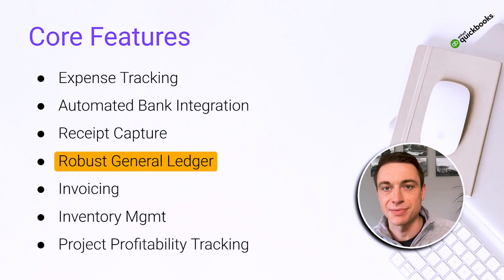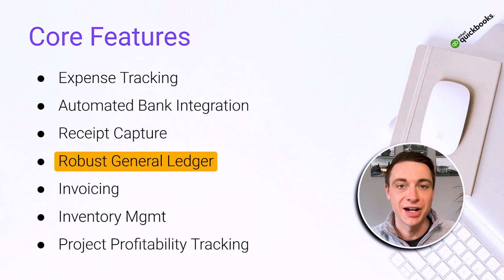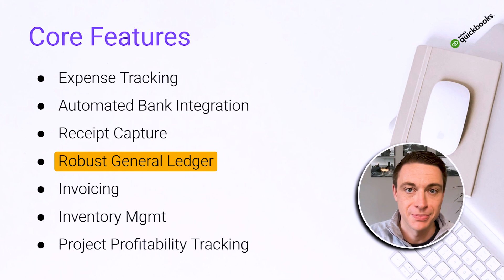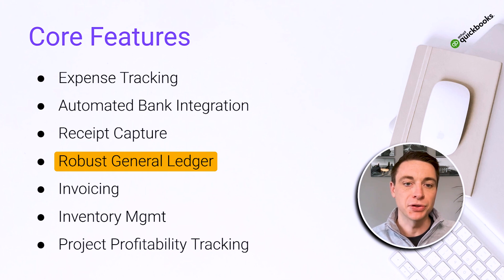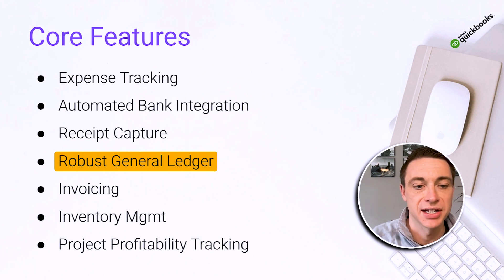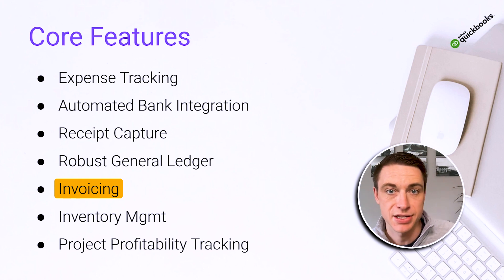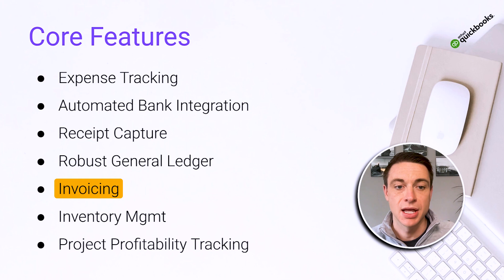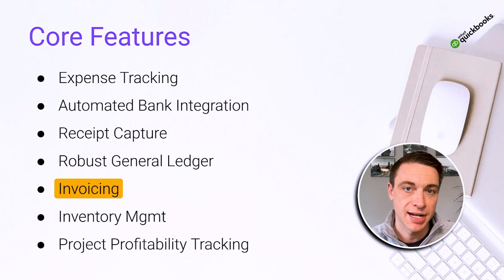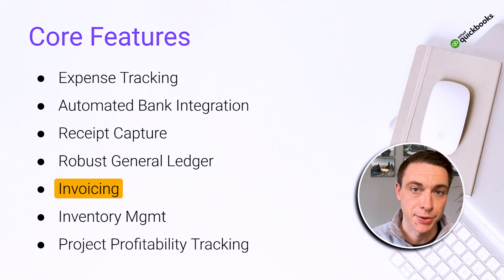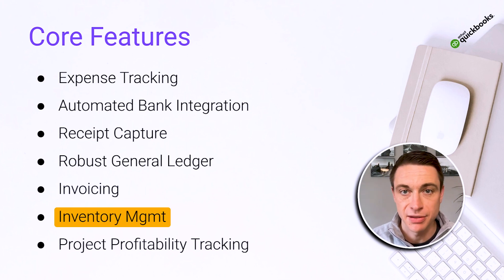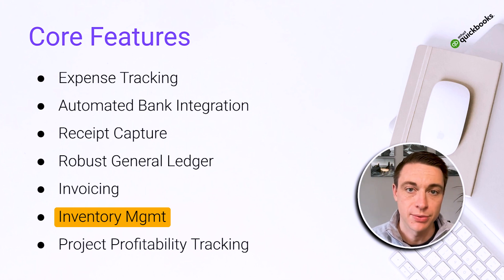It is a robust general ledger — it keeps debits and credits in the right place, ultimately giving you a really sound report. This is something we can't do in Excel or Google Sheets. We just don't have that functionality there. Invoicing is also a core feature — we send invoices to get paid, whether for tenants or construction work, and we can get paid right through QuickBooks Online. There's also inventory management: if you sell physical goods, you can track inventory right within QuickBooks Online.